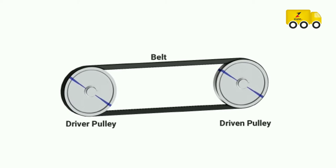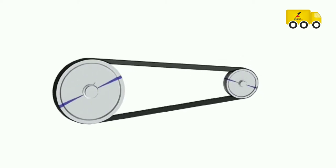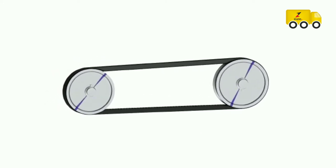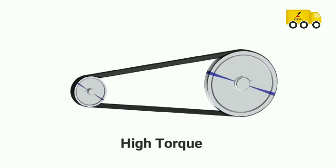High RPM is obtained by increasing the diameter of the driver pulley and decreasing the diameter of the driven pulley. High torque is obtained by doing the opposite. This system allows us to achieve an infinite number of drive ratios between the minimum and maximum limits.